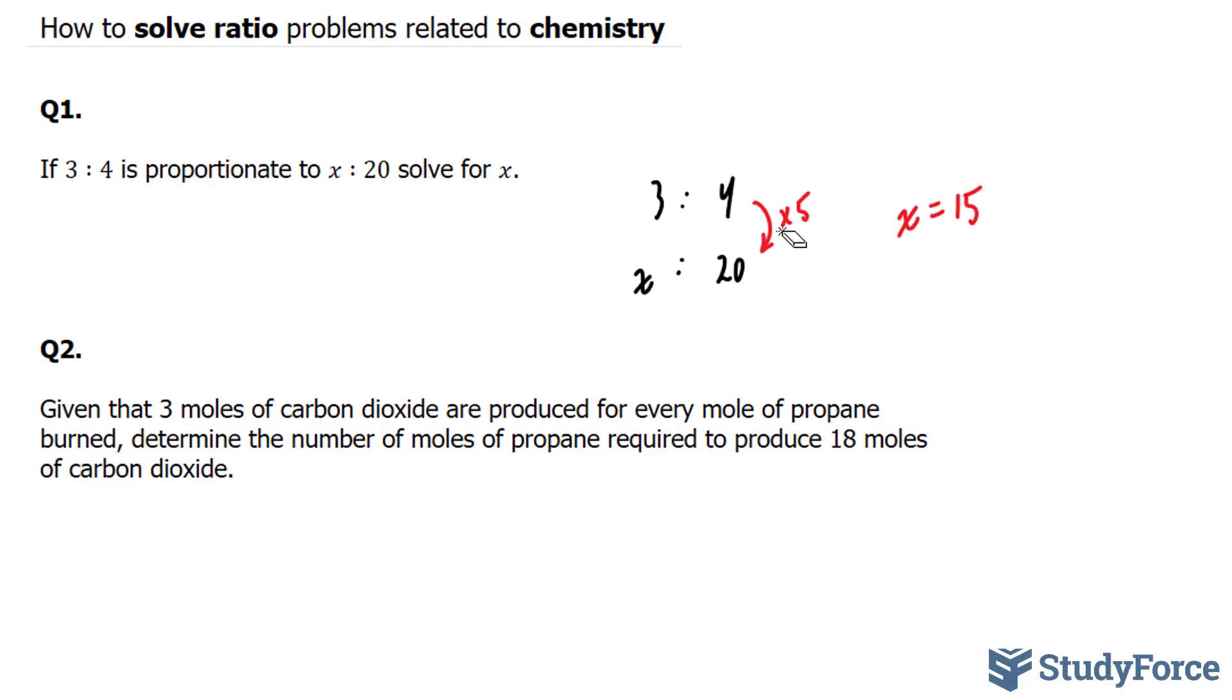Another way to tackle this is to cross multiply. And what that means is you start off at the bottom left corner, this x, you multiply it by this 4 and you end up with 4x. x times 4 is 4x. And similarly, you go to this next number, 20, and you multiply it across to this 3. 20 times 3 is equal to 60.